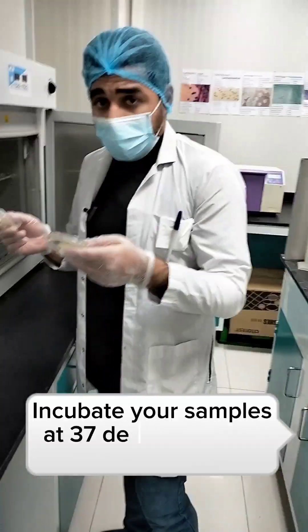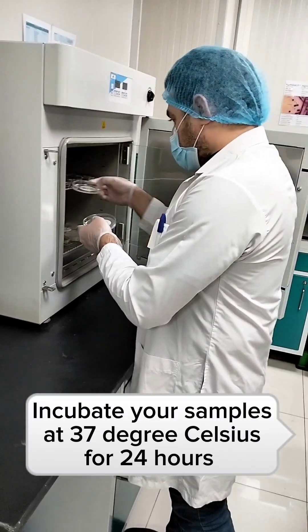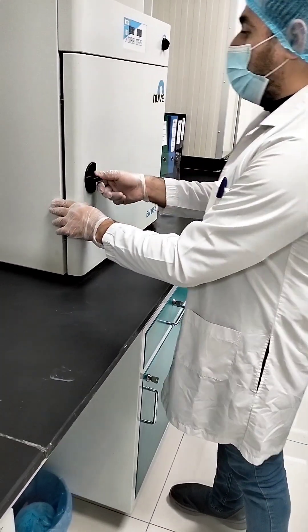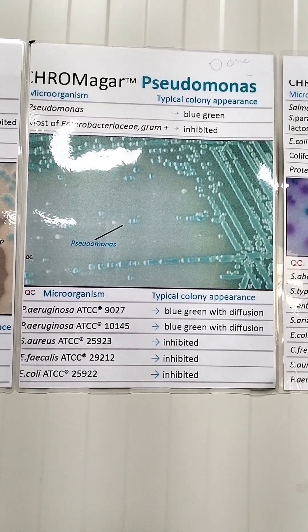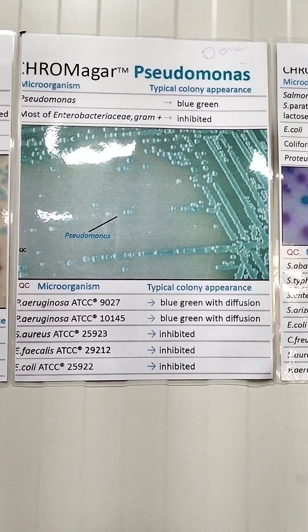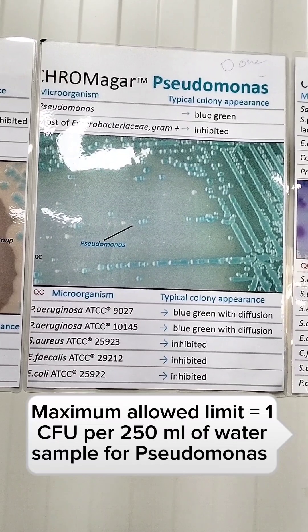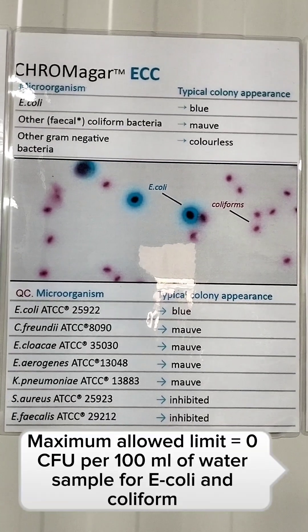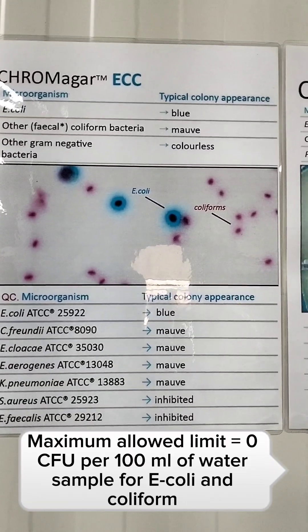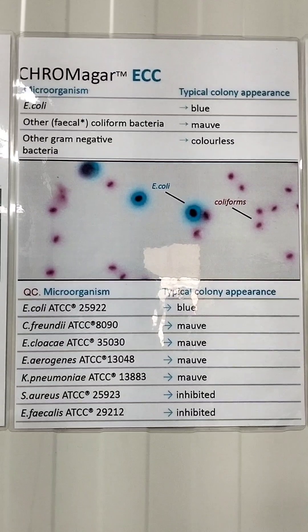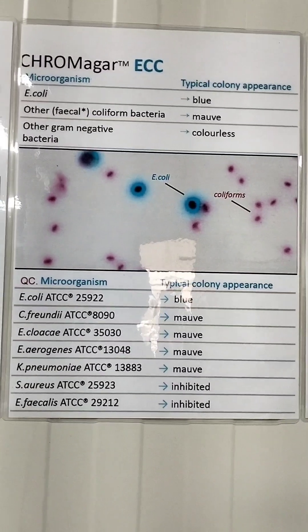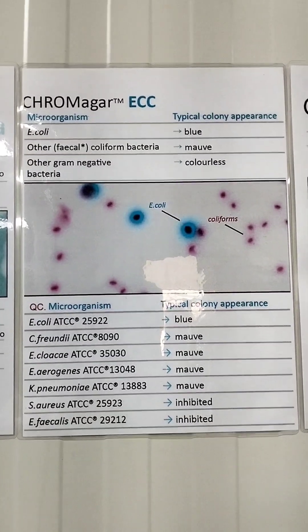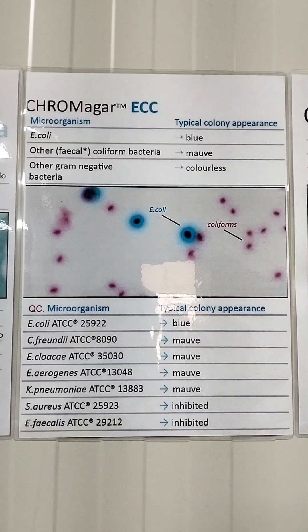I am going to place my samples in the incubator and check the results after 24 hours. If the water sample is contaminated with Pseudomonas, it will produce blue-green colonies with diffusion; the maximum allowed limit per the GSO standard is 1 CFU per 250 ml. For E. coli and coliform, coliform gives red colonies and E. coli gives blue colonies; the maximum allowed limit is zero — they should not be detected in 100 ml of water. If detected, it means your water is contaminated with deadly pathogens and should not be consumed.